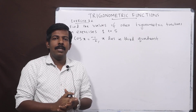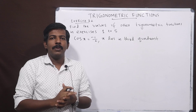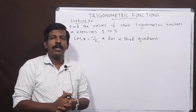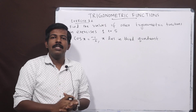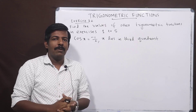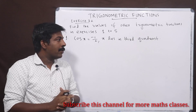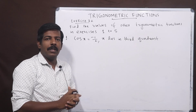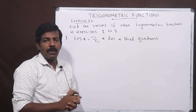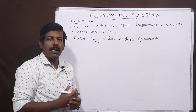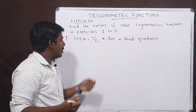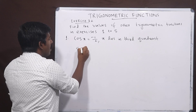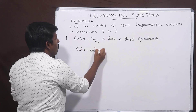In question 5, they have a trigonometry ratio, a coordinate angle, and we need to find the values of the other 5 trigonometry functions. Cos x is equal to minus 1 by 2, and x lies in quadrant 3. We will discuss the values using the identity cos squared x equal to 1.